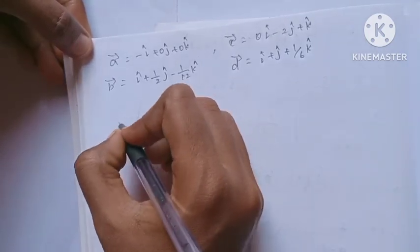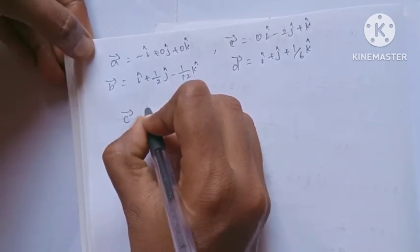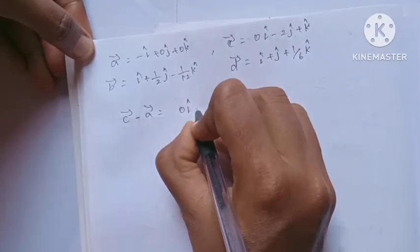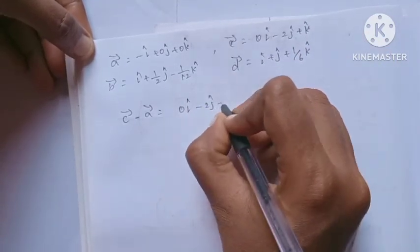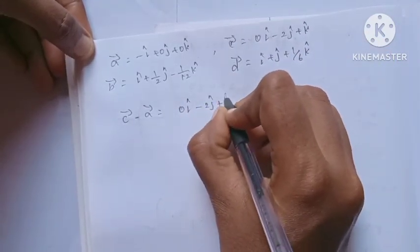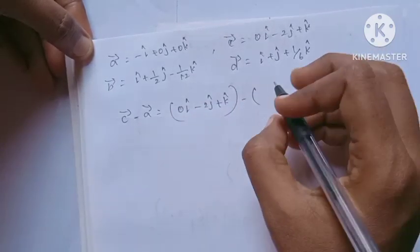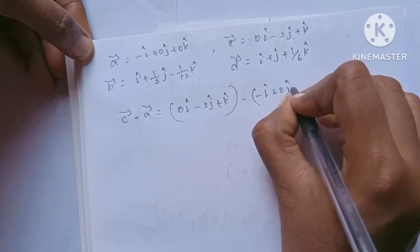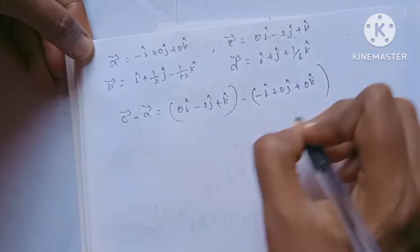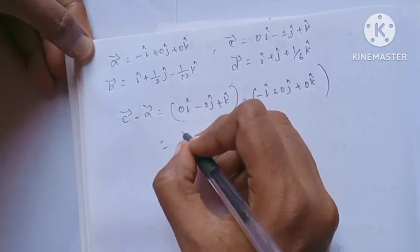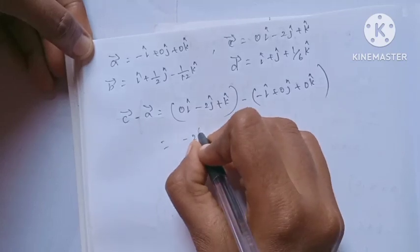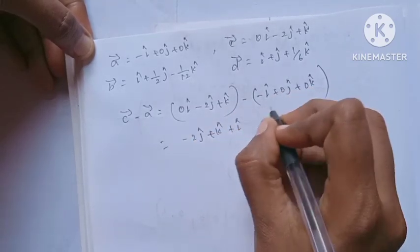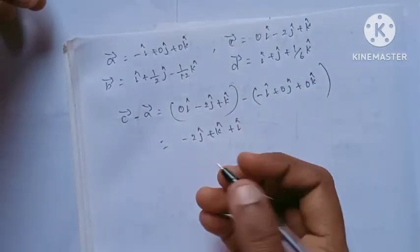C vector minus A vector: C vector is 0i − 2j + k, minus A vector which is −i + 0j + 0k. Minus into minus gives plus i. So C − A = i − 2j + k.